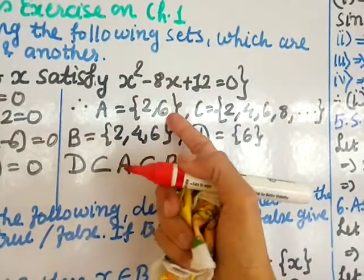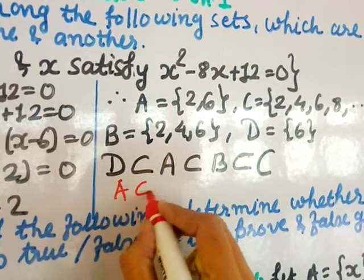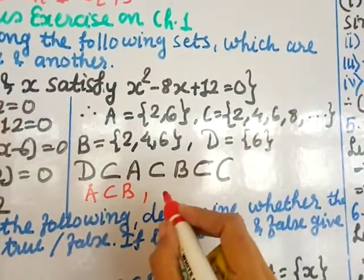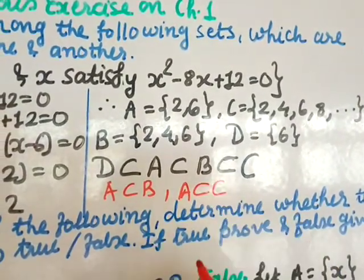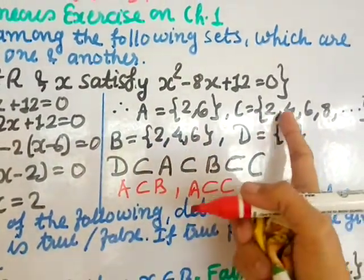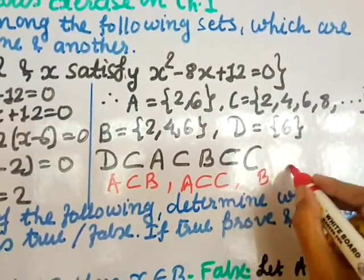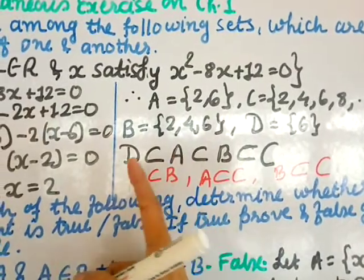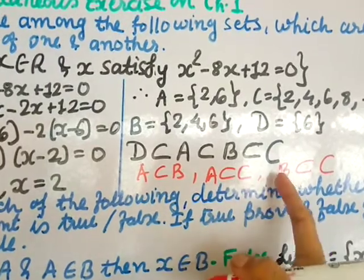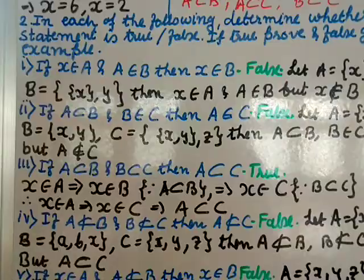Also, {2, 6} (set A) is part of B and C, so A ⊆ B and A ⊆ C. And B = {2, 4, 6} is part of C = {2, 4, 6, 8}, so B ⊆ C. In summary: D ⊆ A, D ⊆ B, D ⊆ C, A ⊆ B, A ⊆ C, and B ⊆ C.